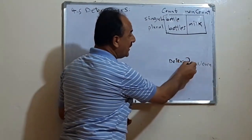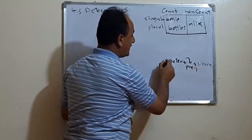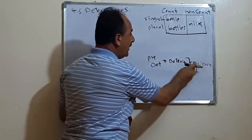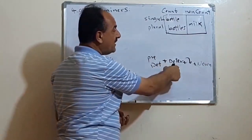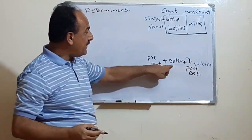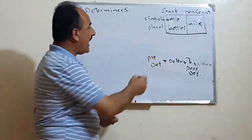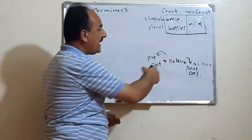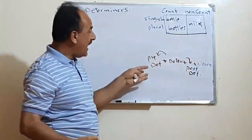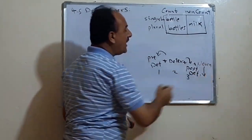Sometimes we have other expressions before the determiner — we call them predeterminers. And another group that comes after the determiners, we call them postdeterminers. So we have three groups: predeterminers, determiners, and postdeterminers — all of them precede the noun.